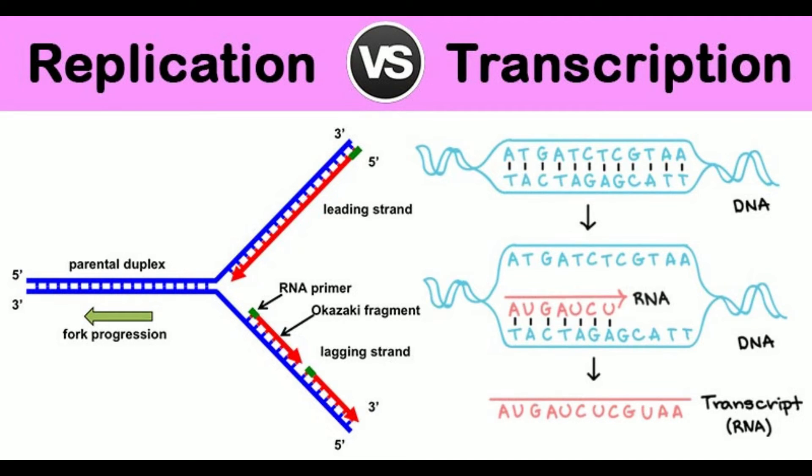11. Unwinding and splitting: Replication involves unwinding and splitting of the entire DNA molecule. Transcription involves unwinding and splitting of only those genes which are to be transcribed.